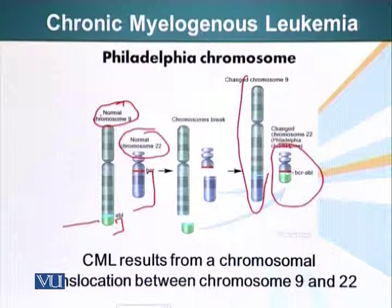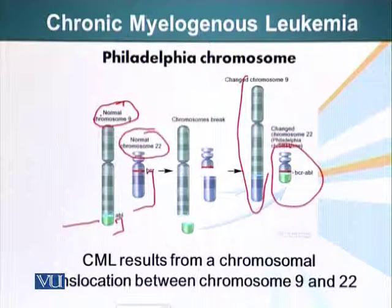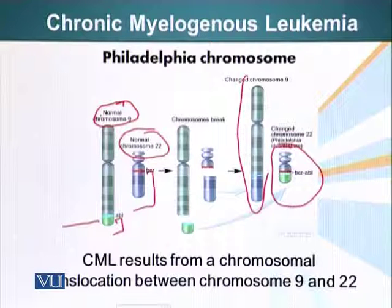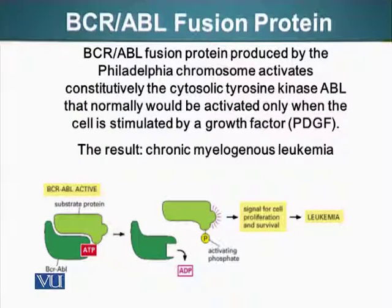The ABL gene normally codes for the full protein, which included a regulatory domain. When this translocation happened, this gene broke off in the middle and lost the inhibitory domain. This fusion protein — a hybrid protein between BCR and ABL — lacks that inhibitory domain and starts phosphorylating proteins even if the signals to proliferate are not there.